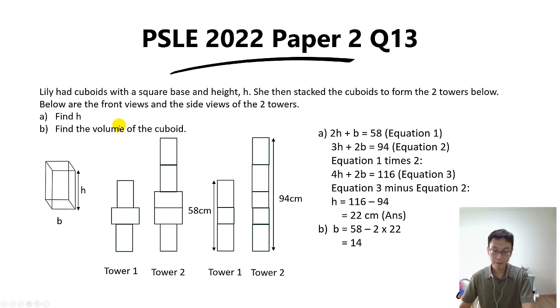Now to find the volume of the cuboid you simply take 14 times 14 because the square base, then times the height which is 22, and the final answer is 4312 cm cubed.